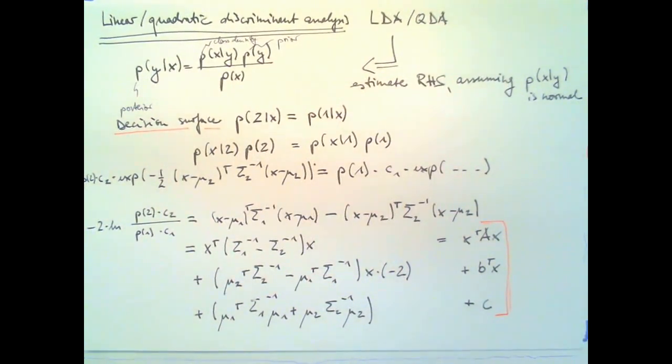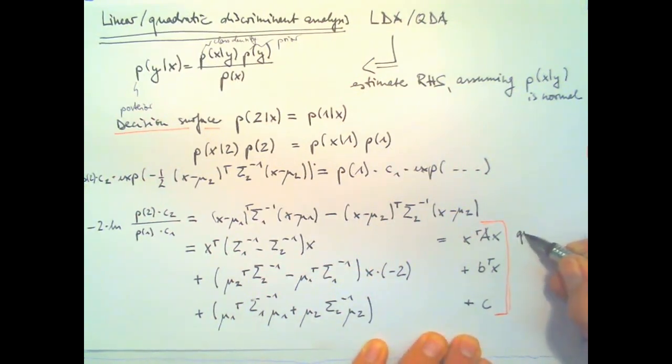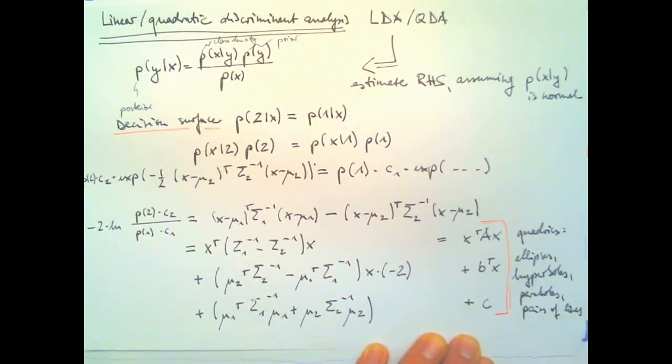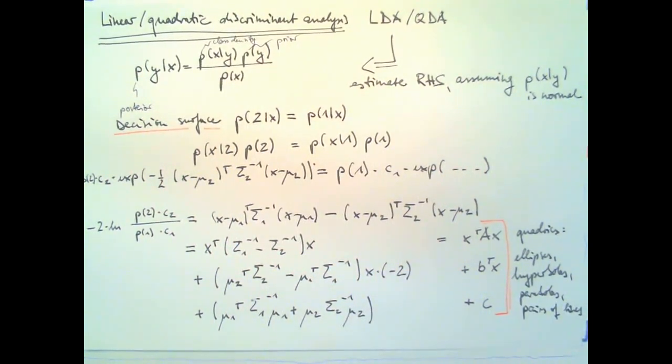And, something which is bilinear in X is a so-called quadric. And, familiar examples of quadrics are ellipses or hyperbolas or parabolas or pairs of lines. So, that's really the most important part.